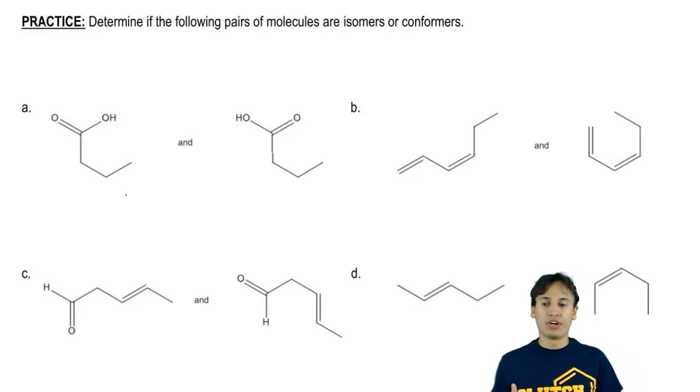What I want to do for this practice is go pair by pair and look at the following sets of molecules and determine if they are related to each other as isomers, meaning that things are connected differently, or as conformers, which means that they just rotated into that position.